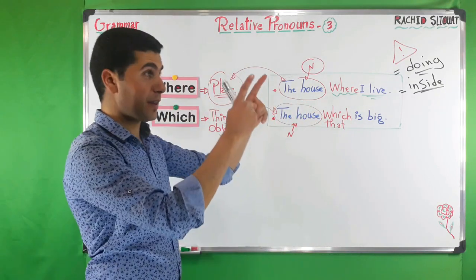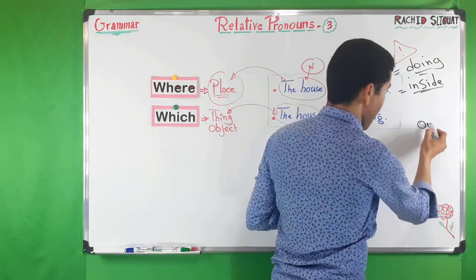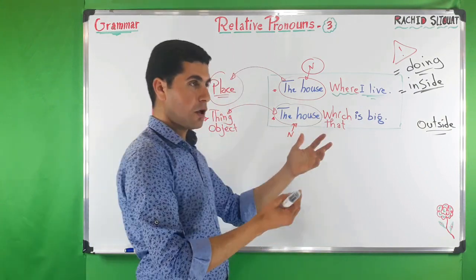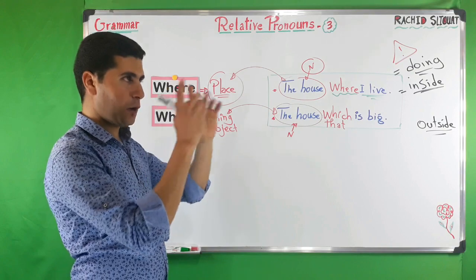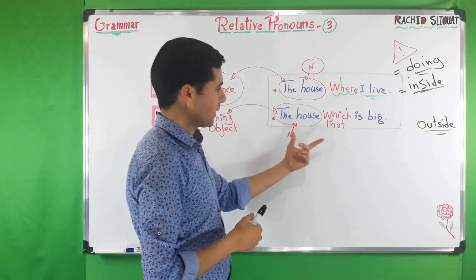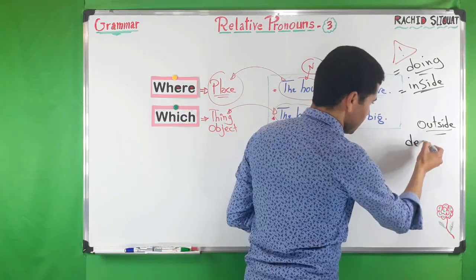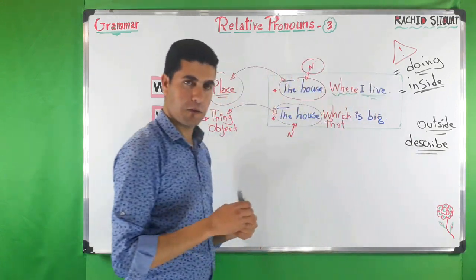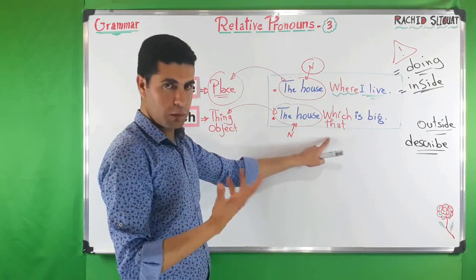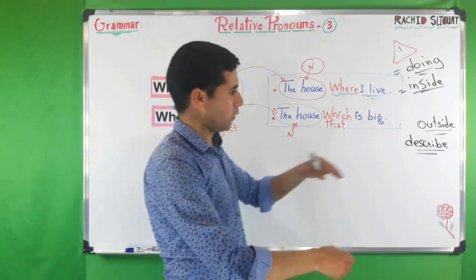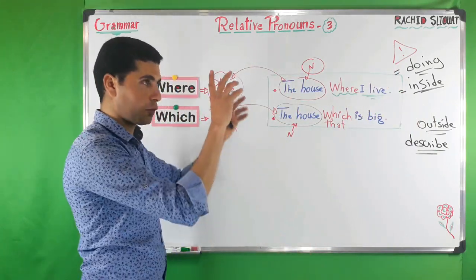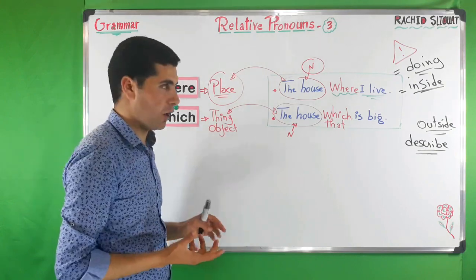When you say 'the house is big,' you are talking about the place from outside — you are describing it. So which or that with a place is always when we talk about it from outside, when we describe it. When we describe it, we refer to it as a thing or an object.